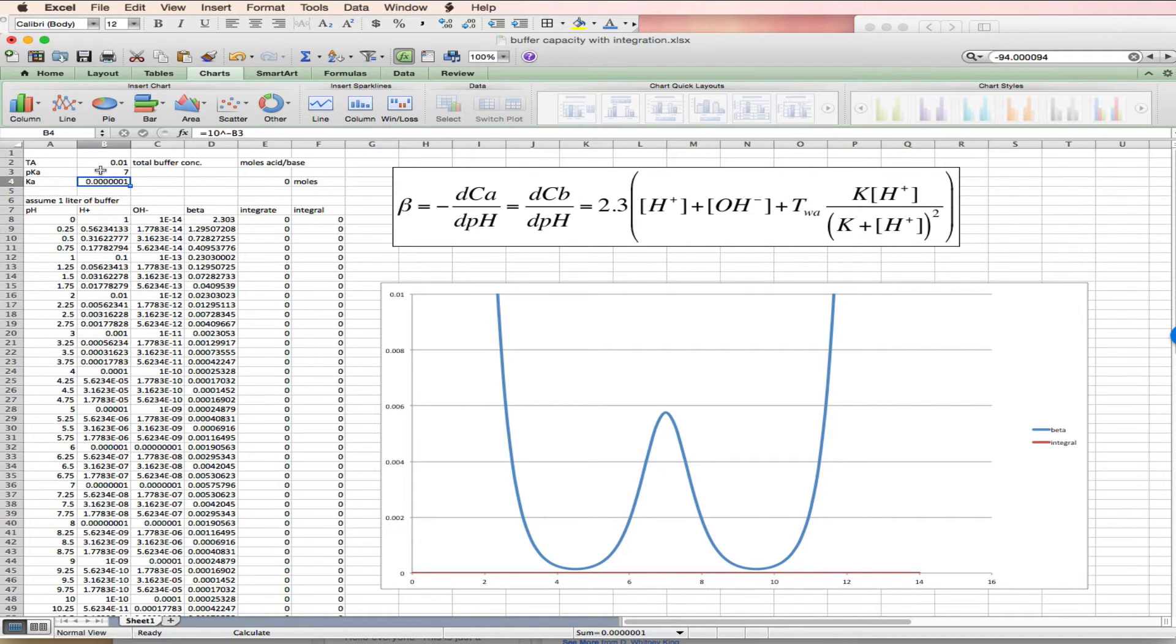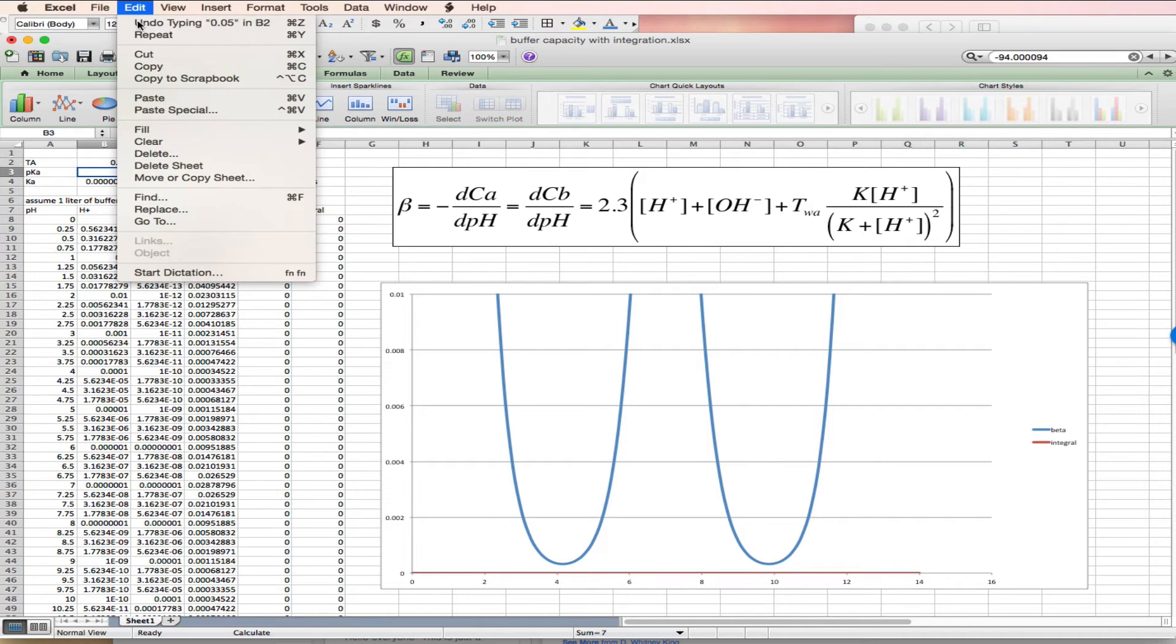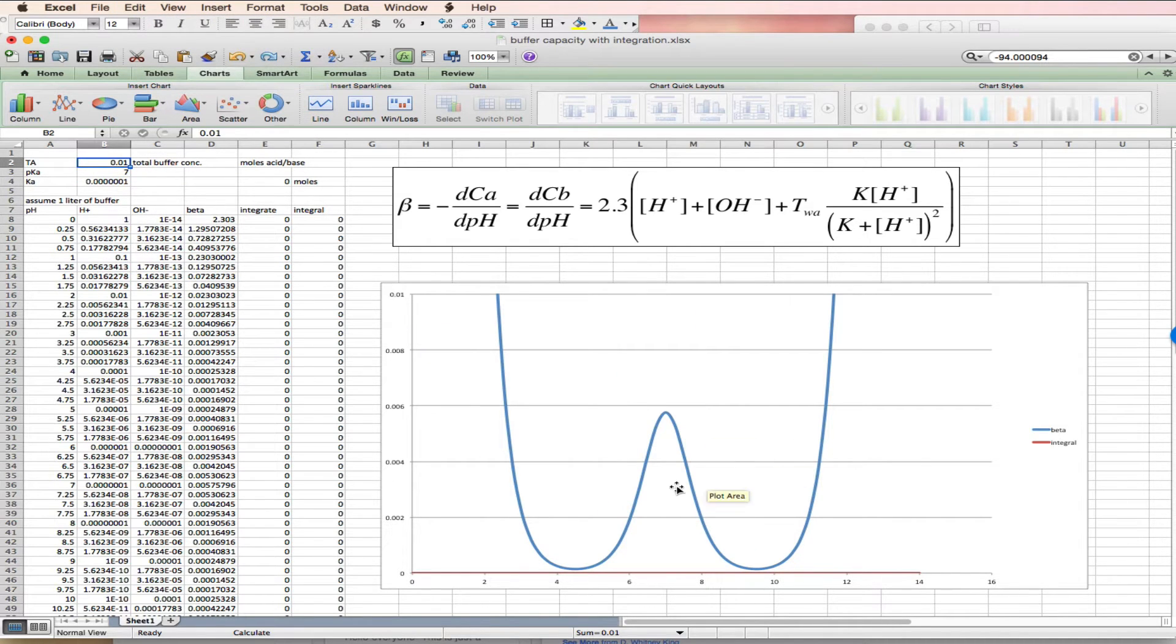If I increase the concentration, now right now I have a 10 millimolar buffer, but if I make it a 50 millimolar buffer, that peak goes up. We'll send it back to 10, just so where everything stays on scale.